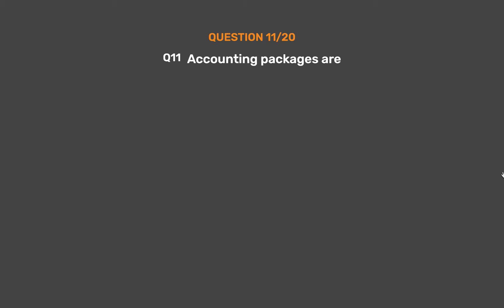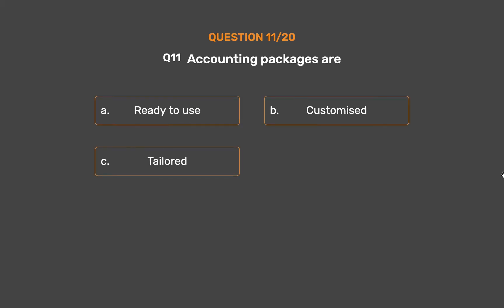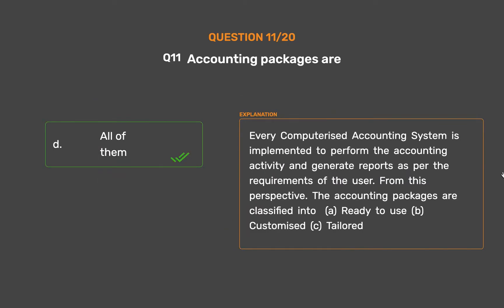Question number 11. Accounting packages are: Option A: Ready to use. Option B: Customized. Option C: Tailored. Option D: All of them. The correct answer is Option D: All of them. Every computerized accounting system is implemented to perform accounting activity and generate reports as per user requirements. From this perspective, accounting packages are classified into: A. Ready to use, B. Customized, C. Tailored.